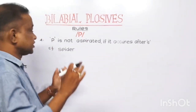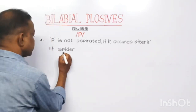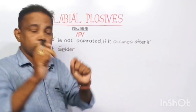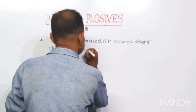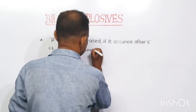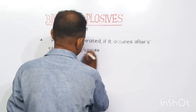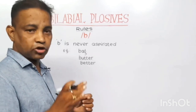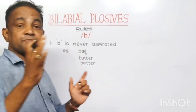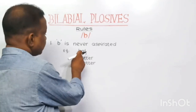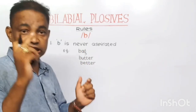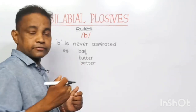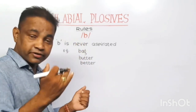Rule number four: /p/ is not aspirated if it occurs after /s/. When /p/ comes after /s/, you cannot aspirate it — for example, 'spider'. And /b/ is never aspirated. You cannot pronounce 'back' or 'border' or 'badder' with aspiration, because /b/ is never aspirated.